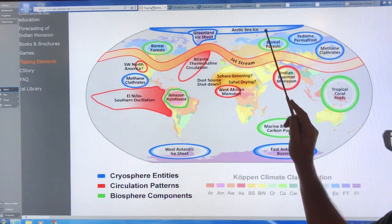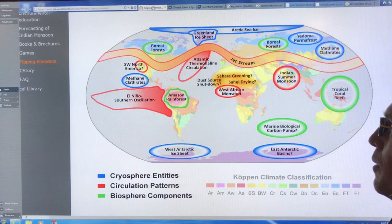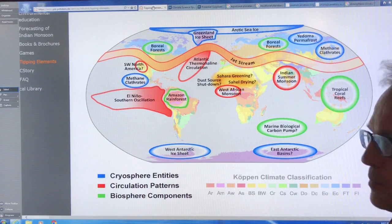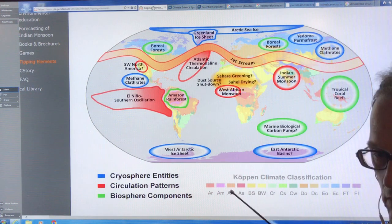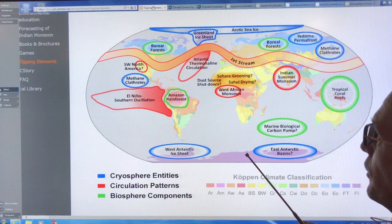Losing Arctic sea ice in the summer by the end of the melt season, which would be September. And then once it goes for the first year, subsequent years, feedbacks kick in and it's gone for longer and longer until it's gone probably year-round within a decade or so.